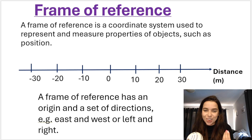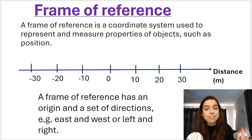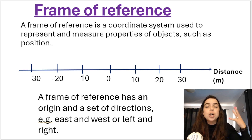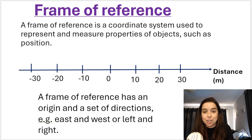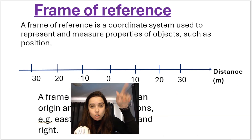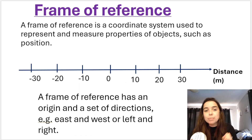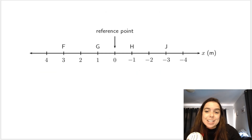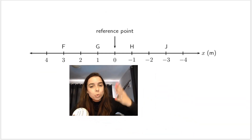The first important concept to understand is a frame of reference. A frame of reference is defined as a coordinate system used to represent and measure properties of objects, such as position. In this video we'll use a frame of reference to help us understand position. What you need to understand is that it has an origin — in this example I'm taking my origin to be zero — and a set of directions: left or right, east or west, up or down.